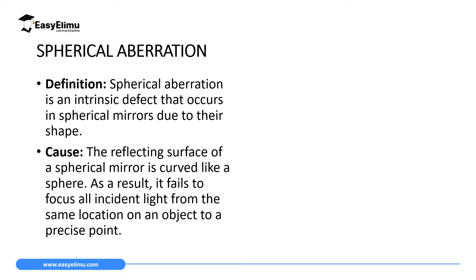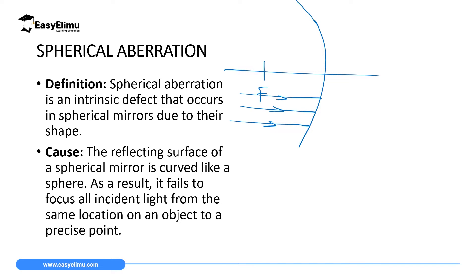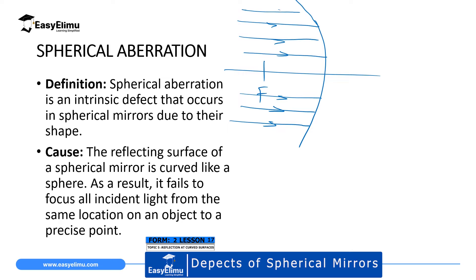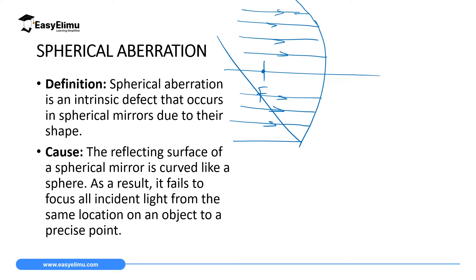If you have a mirror with a very wide aperture and a small curve, with a principal focus at one point, and you have a parallel beam close and parallel to the principal axis — but if this beam is very wide and the mirror has a very wide aperture — then most of the rays which are close will converge at the focal point F. However, those which are very far away from the principal axis will converge outside that focal point, and that results in what we call spherical aberration. Spherical aberration is caused when the mirror has a very wide aperture and rays far from the principal axis cannot converge at the principal focus.